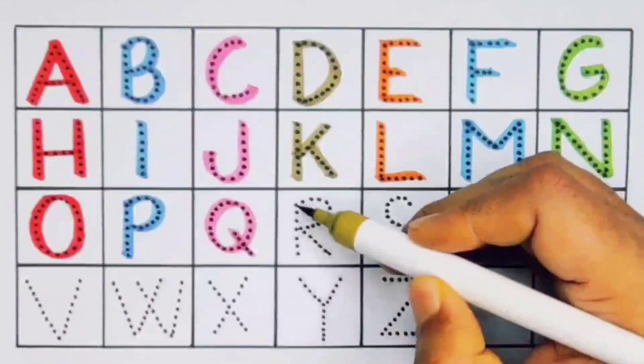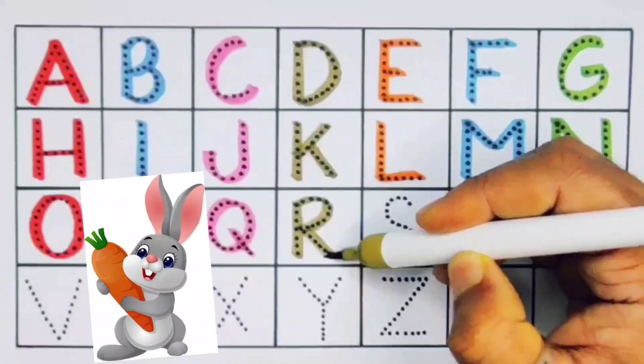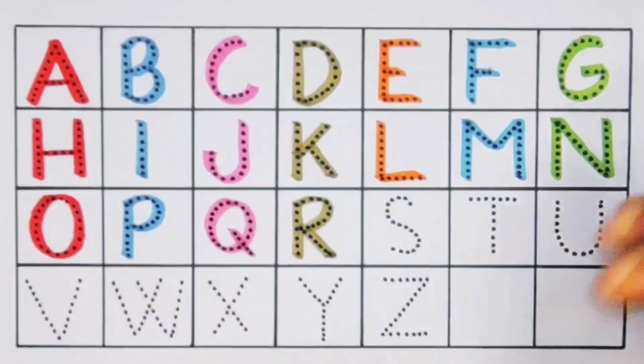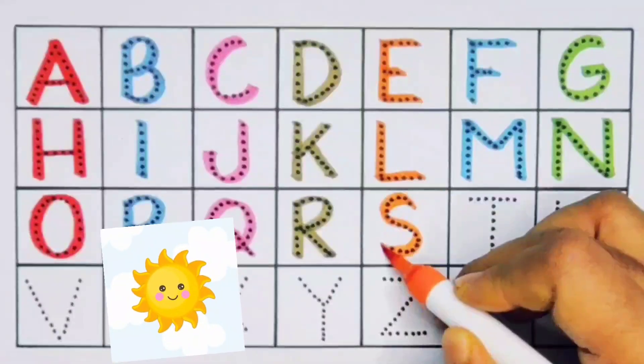Next kids R, R for rabbit, R for rabbit. Next S, S for sun, S for sun.